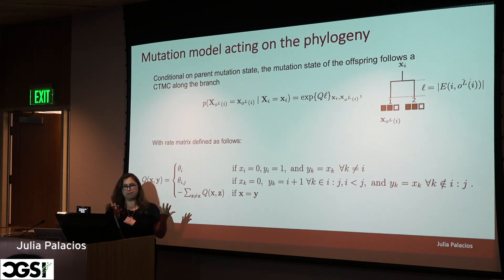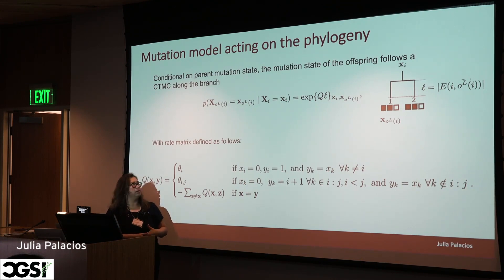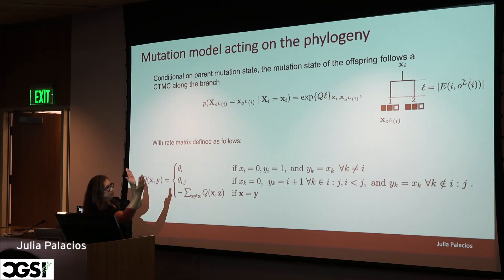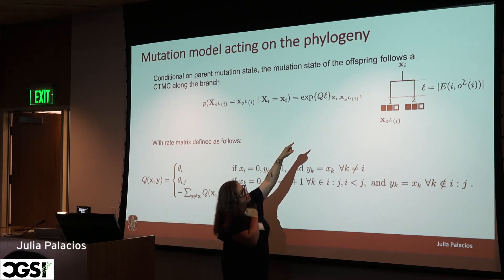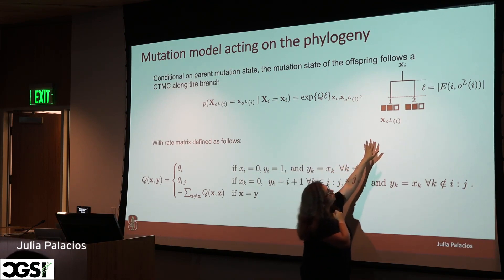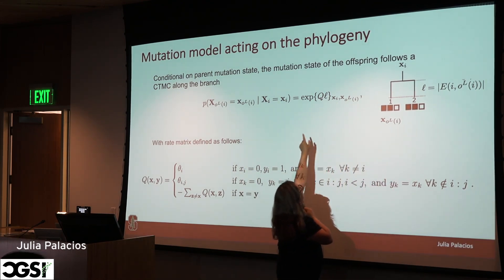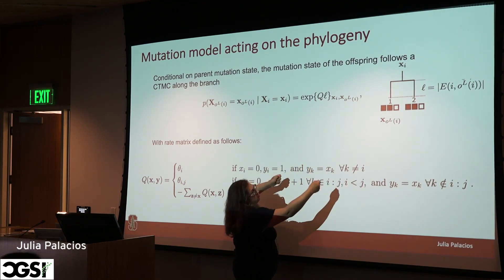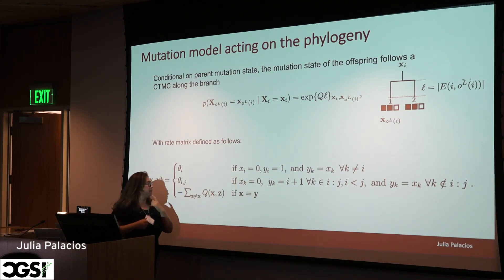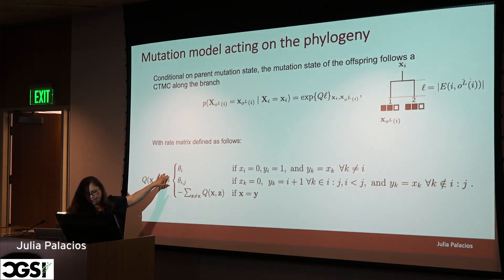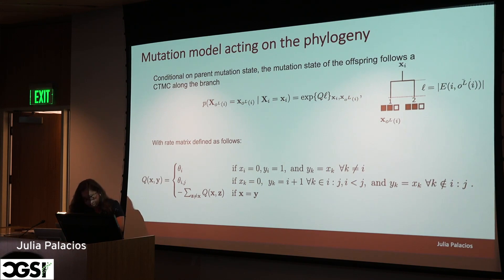We imagine this process evolves on the tree as a continuous time Markov chain. Thinking about one specific barcode with S sites: if you knew the state of the parent node, you would compute the probability of the two observed states as a continuous time Markov chain evolving on the branches of the tree. To specify the model I need to define transition rates — a transition rate matrix Q — and I'll show you with an example.